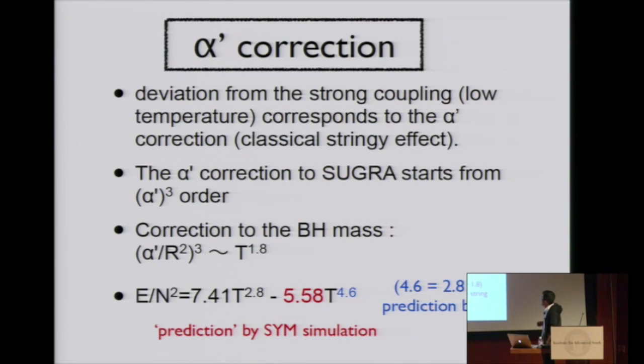We can expect that the correction should be proportional to T^4.6. But in gravity side, it's not easy to calculate the overall coefficient. So we determined this coefficient by fitting numerical data from super Yang-Mills. In that sense, this number is a prediction from super Yang-Mills.